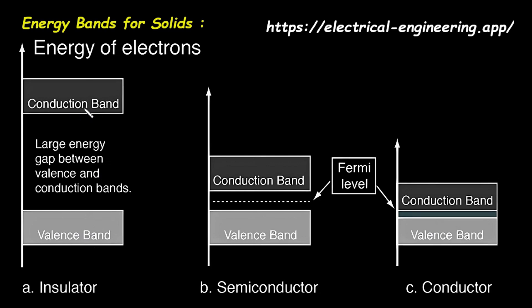If an electron can get enough energy to jump from its home in the valence band up to this open conduction band, it becomes free to move throughout the material. It is these free-moving electrons that create an electric current. The space between these two bands is called the energy gap, or band gap. This gap represents the minimum amount of energy an electron needs to gain to make the jump from the valence band to the conduction band. The size of this energy gap is what determines whether a material is an insulator, a semiconductor, or a conductor.